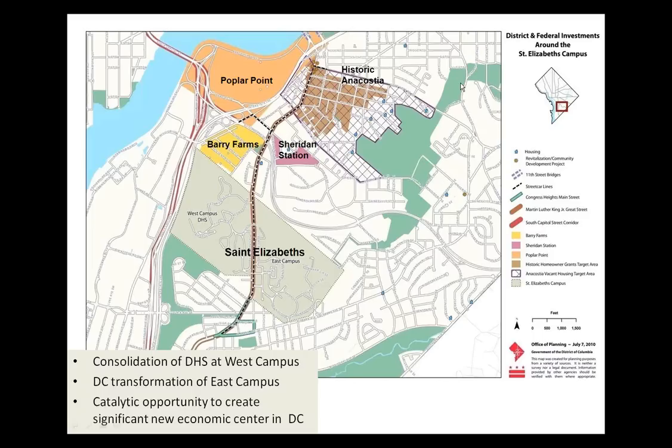We have a number of planning challenges to address as we figure out how best to leverage the consolidation. But the economic environment overall east of the river is starting to change. There have been significant investments in infrastructure, housing, and commercial development — totaling more than $4 billion. There's a major housing project going on at Barry Farms, and a major mixed-use project at Poplar Point. Together with the consolidation of DHS, there's a real opportunity to create a significant new economic center in the district.